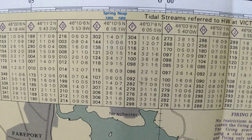On this chart the tidal diamond data appears at the top — sometimes it's on a separate chart. Diamond E is the one we're crossing, and four hours before high water, which is the separated middle row, we see that the tidal stream is in the direction of 138 degrees true. Of the two rates shown, the spring rate is 1.9 knots, so we can add this as a vector to the diagram we've started to draw.